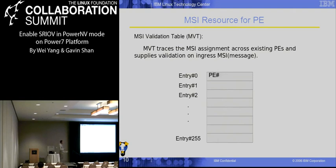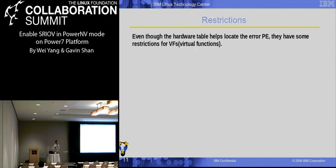The next one is for the MSI address, called the MSI Validation Table. The MVT handles MSI alignment across existing PEs. When writing data to the MSI address, the system can identify which PE this MSI address belongs to. So we have many hardware tables to help us find which error happens to which PE and perform recovery.